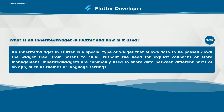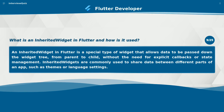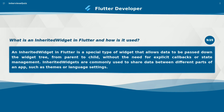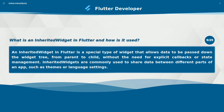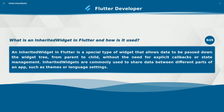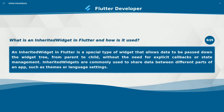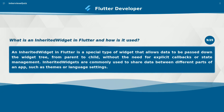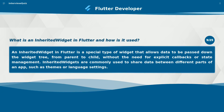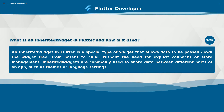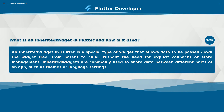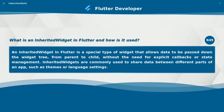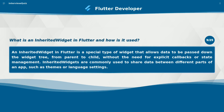What is an inherited widget in Flutter and how is it used? An inherited widget in Flutter is a special type of widget that allows data to be passed down the widget tree, from parent to child, without the need for explicit callbacks or state management. Inherited widgets are commonly used to share data between different parts of an app, such as themes or language settings.